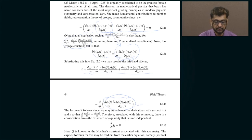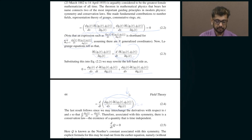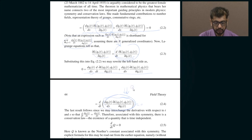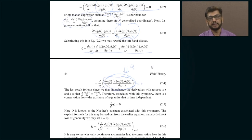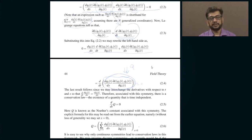This is Noether's theorem. The moment there is a continuous symmetry, it implies a conservation law, and moreover it tells you explicitly what is conserved. The conserved quantity — which I have called Q, the Noether's constant — is the quantity Σ (∂L/∂q̇) · (dq_s/ds). We have successfully constructed a quantity that does not change with time simply because there is a continuous symmetry. The moment you spot a symmetry in the problem, there is immediately a conserved quantity.